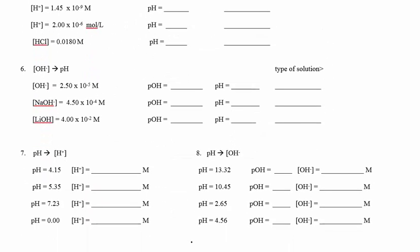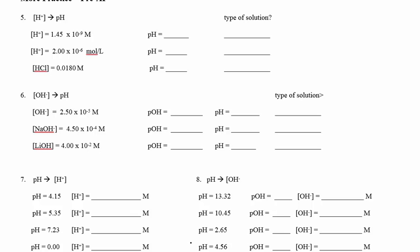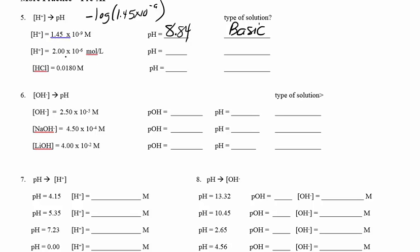They're not always nice even numbers, so just use the calculator button. Enter negative log of 1.45×10⁻⁹ and you get a pH of 8.84 — that's a basic solution since it's above 7. Enter negative log of 2×10⁻⁶ and you get a pH of 3.7, which means acidic.